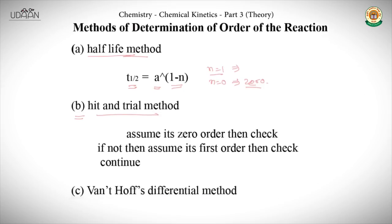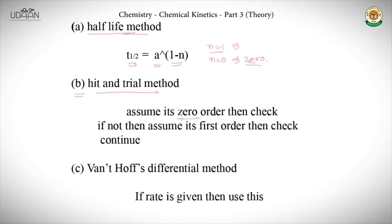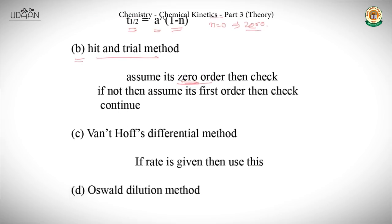The second method is the hit and trial method. In the hit and trial method, we assume the reaction is zero order and check whether it satisfies the zero order formula. If it is satisfied, we confirm it is zero order. If not, we try the first order. If first order is not satisfied, then we try the second order. When it is satisfied, we have our answer.